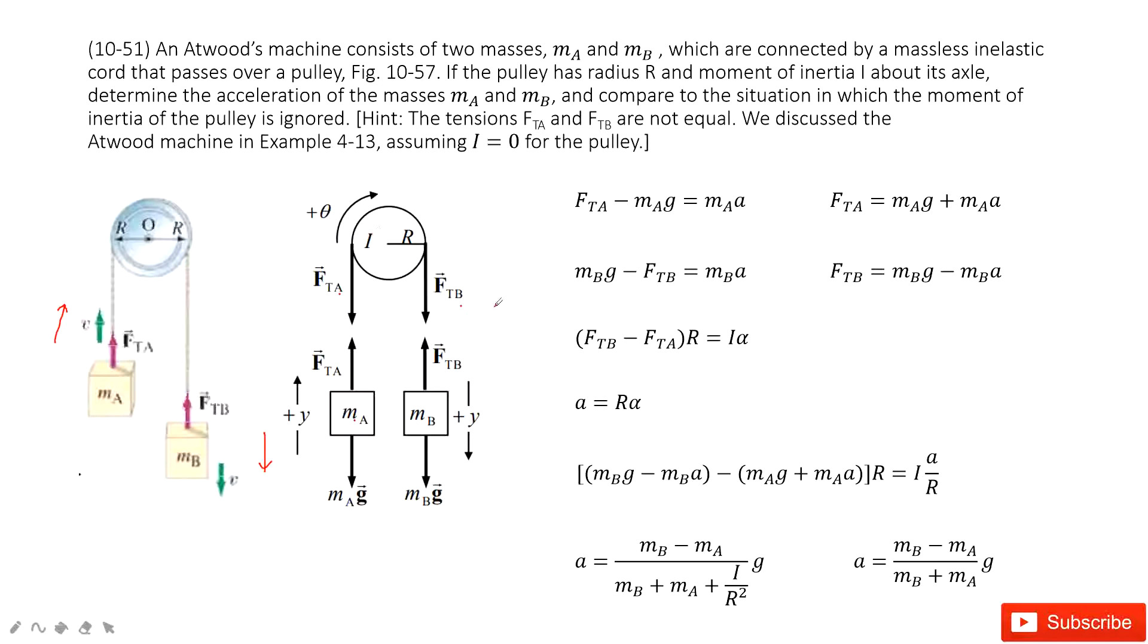And the torque for this pulley is the net force, FTB minus FTA times R. Do you agree? Yeah. This is the force times R equal to I times alpha.